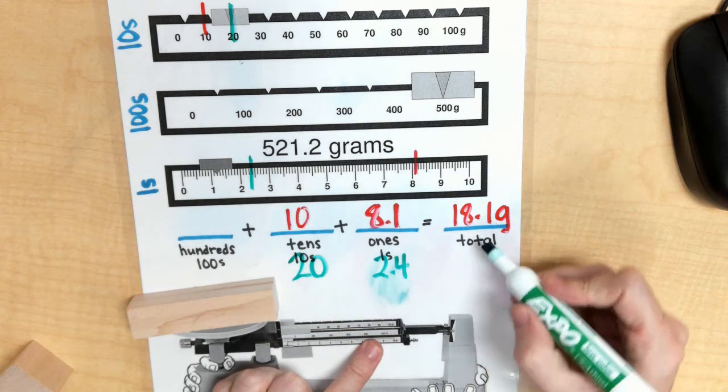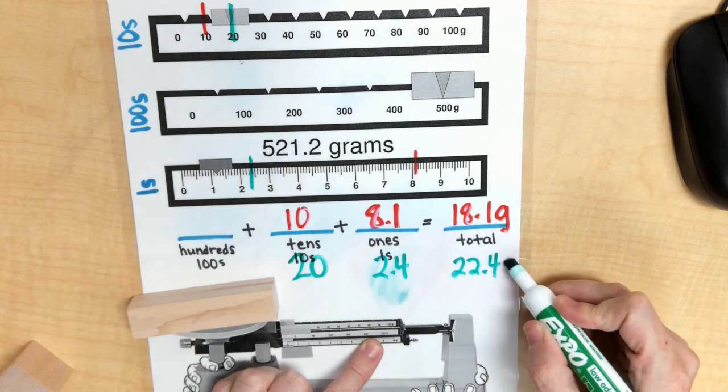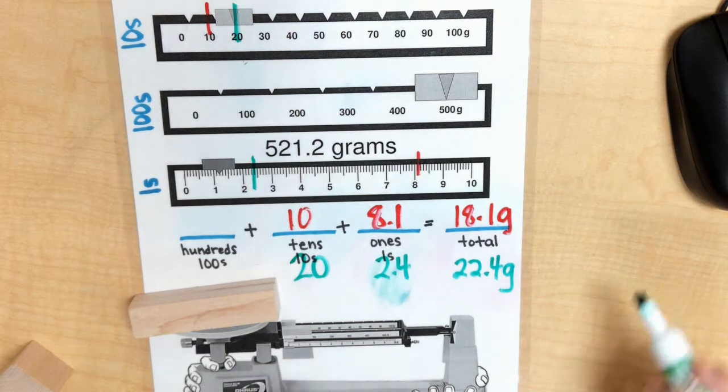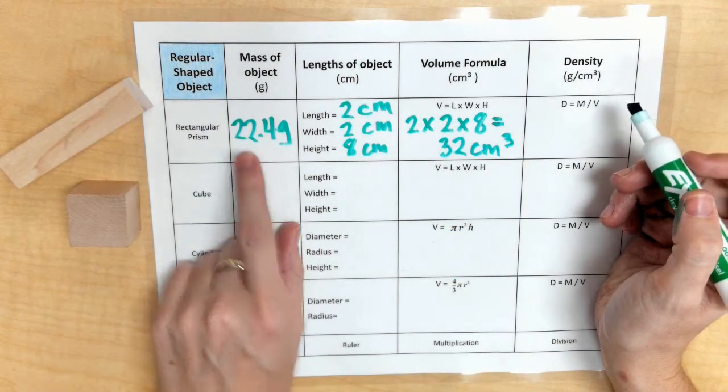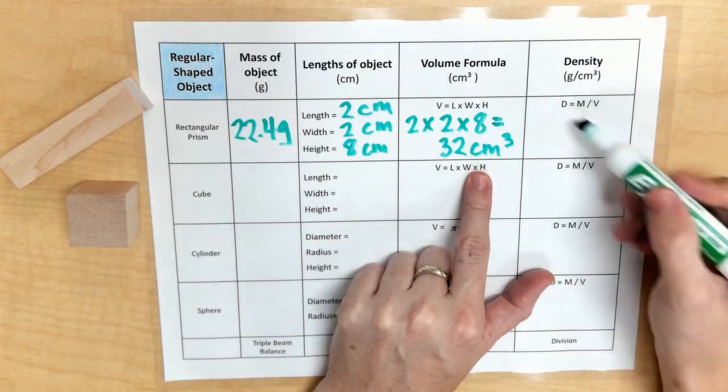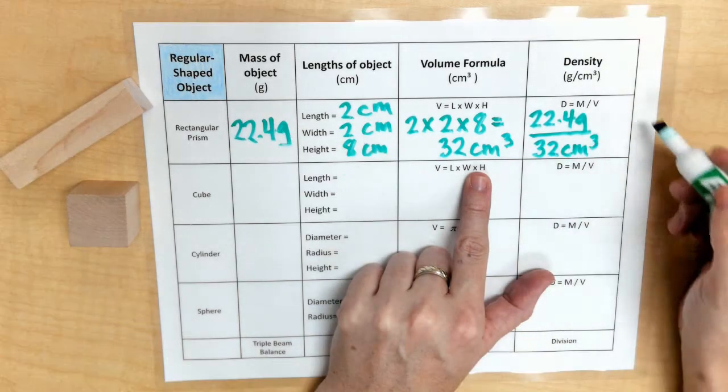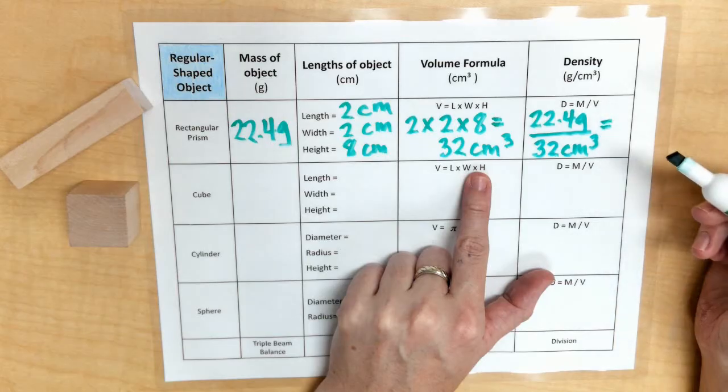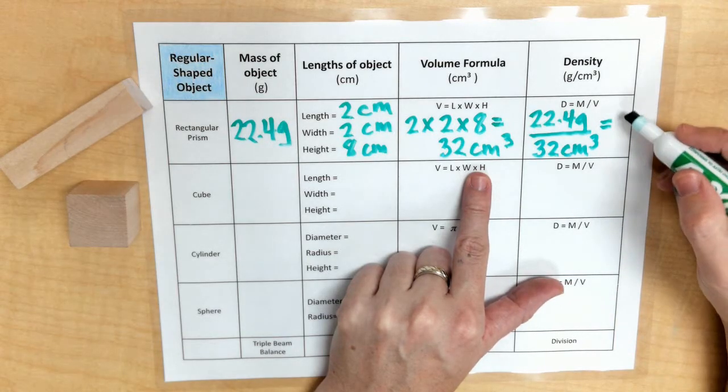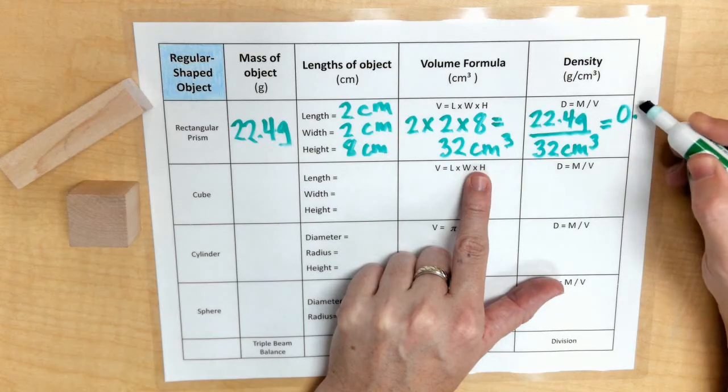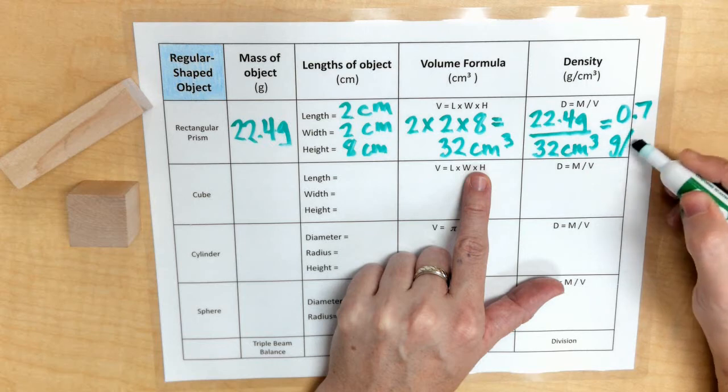So then I can take my mass and my volume and I can do some further calculations. And I can use my brain or a calculator and figure out that the density is 0.7 grams per centimeters cubed.